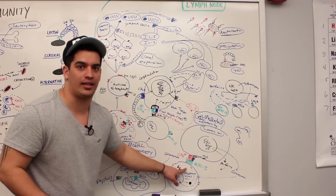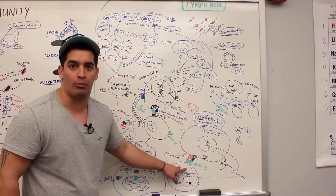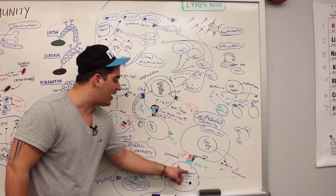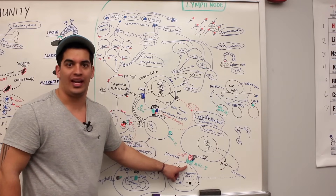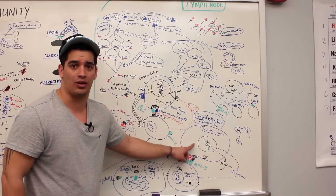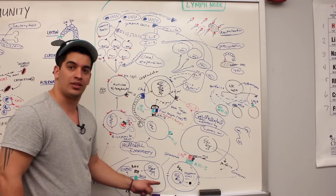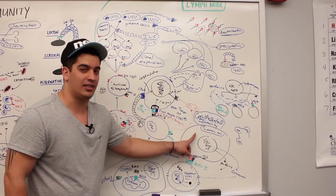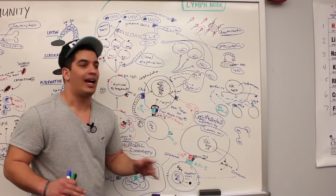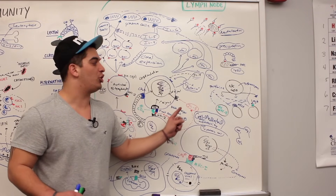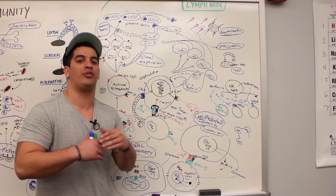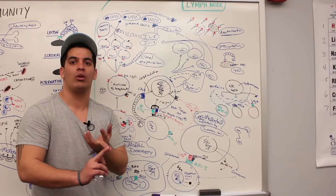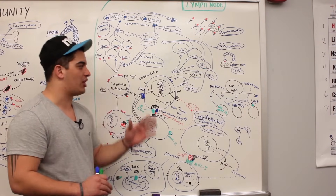Cell-mediated immunity deals with endogenous molecules inside the cell — viral proteins or cancerous peptides produced inside. Those are a problem because they've already invaded, infected, and caused damage inside the cell. There's no going back for that cell — it's destined for death. Cytotoxic T cells have to deal with this by eliminating these cells. Natural killer cells are part of the innate immune system, not adaptive immunity — they can react to no MHC class 1, to MICA (lacking beta-2 microglobulin), or to IgG antibodies. That covers everything on adaptive immunity.